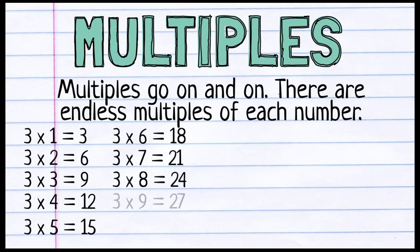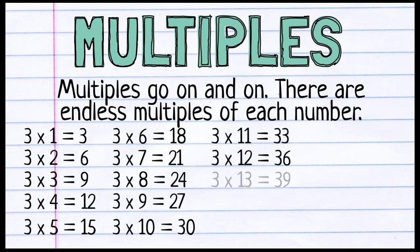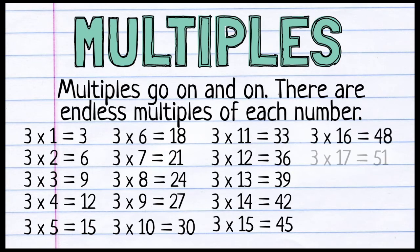3 times 6, 3 times 7, 3 times 8, 3 times 9, 3 times 10. We can keep going, multiplying 3 by bigger and bigger numbers each time. And every single time, we will end up with a multiple of 3.